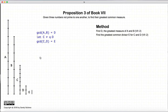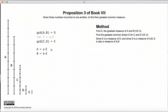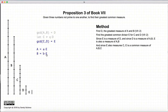The next thing we need to do is find the greatest common divisor between C and D. Let's call it E, and remember since C and D are not prime to one another, E is not equal to 1. Now since E measures D, and D measures A and B, then E also measures A and B. And since E measures C and A and B, it is a common measure of A, B, and C.